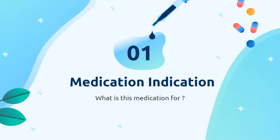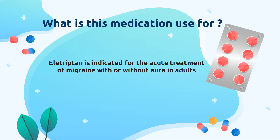First, let's talk about what this medication is for. Allotriptin is indicated for the acute treatment of migraine with or without aura in adults. Aura is described as sensory disturbances. These disturbances can include flashes of light, blind spots, and other vision changes.